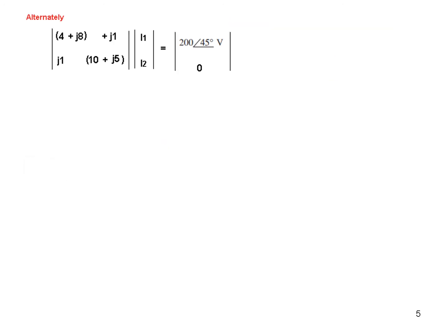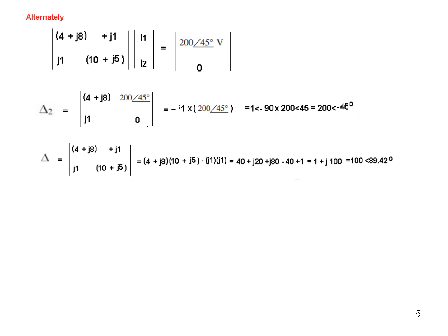Okay, another way of solving the same thing is that you solve them separately, that is delta 2. Solving this, we get 200 angle 45, and delta 1, solving step by step, this value comes to be 100 angle 89.42.